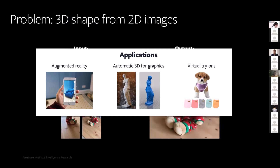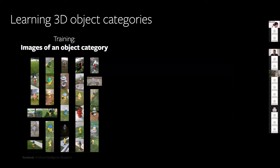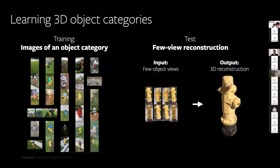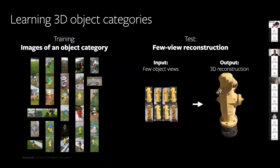I would like to get more specific about the actual machine learning task we are tackling here. We assume category-specific 3D reconstruction, where as a training set we have a bunch of images of an object category — for instance, a bunch of hydrants here on the left. Our goal is to obtain a model which learns the generic structure of the object category in the form of geometry and appearance, so that we can use these trained priors in the few-view reconstruction task, where we are given a small number of input views and must reconstruct the whole object from this partial observation.